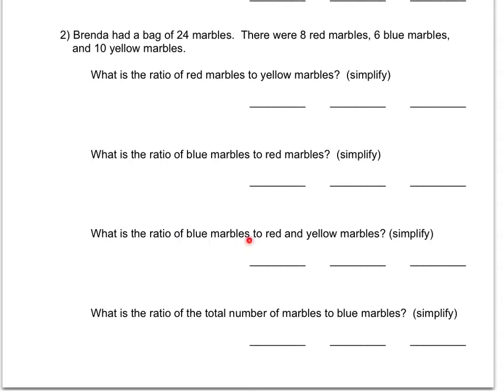I'll do this one here. It says blue marbles, we have 6 blue marbles, and then we have 8 red marbles plus yellow marbles we have 10. So that's 6 to 18. 8 plus 10 is 18. Well, I know that the greatest common factor between 6 and 18 is 6.